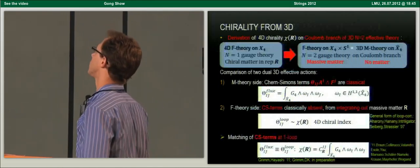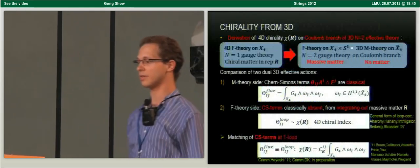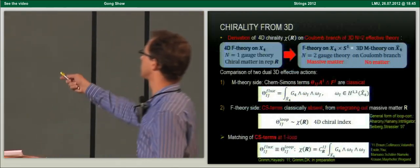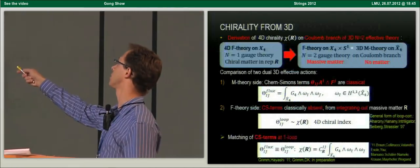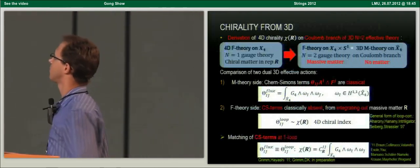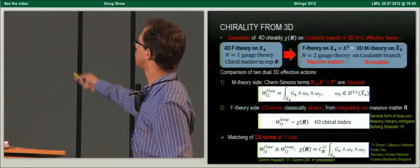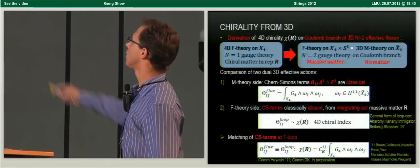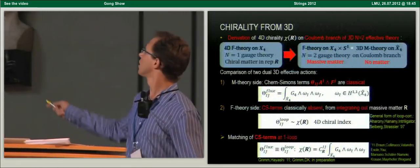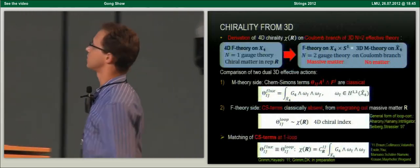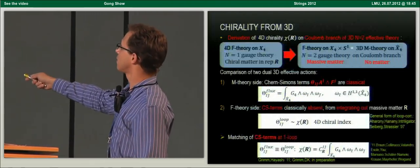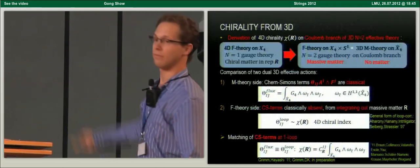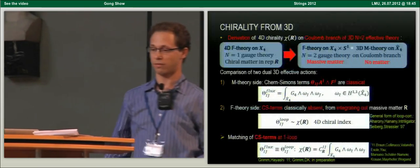By comparing the two sides, we see an obvious mismatch: on the M-theory side there is no such massive matter in three dimensions. On the M-theory side there are classical Chern-Simons terms determined by certain flux integrals, whereas on the F-theory side such Chern-Simons terms are classically absent and only generated at one loop by integrating out the massive matter. In this loop computation, these Chern-Simons terms encode the four-dimensional chiral indices. Upon matching the two formulations, we effectively compute these loop Chern-Simons terms proportional to the chiralities by evaluating flux integrals, so the four-dimensional chiral index is given by a certain flux integral of this form.